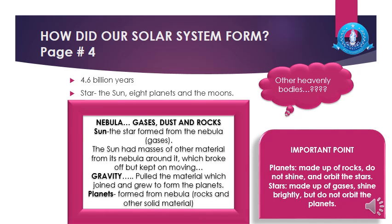The important difference between planets and stars: stars are made up of burning gases — because of those gases, stars shine brightly. Stars do not orbit planets; rather, planets orbit the stars. On the other hand, planets are made up of rocks, do not have their own light, and they orbit the stars.